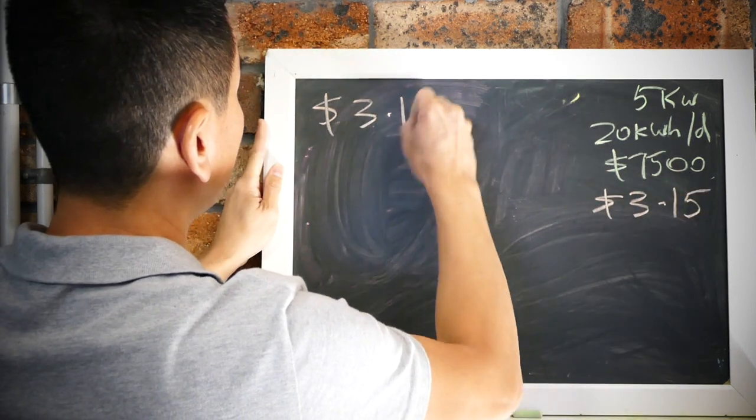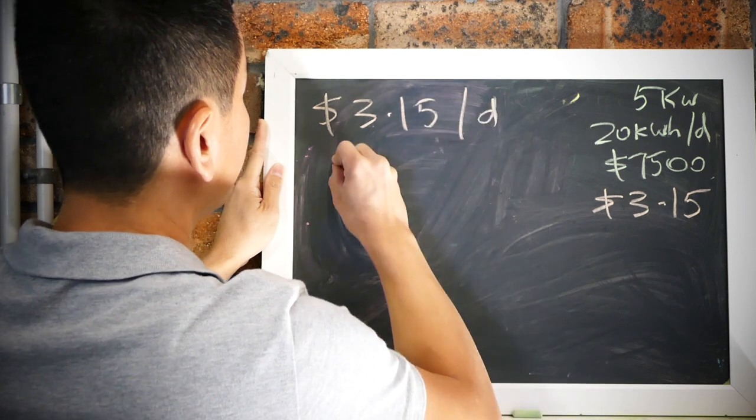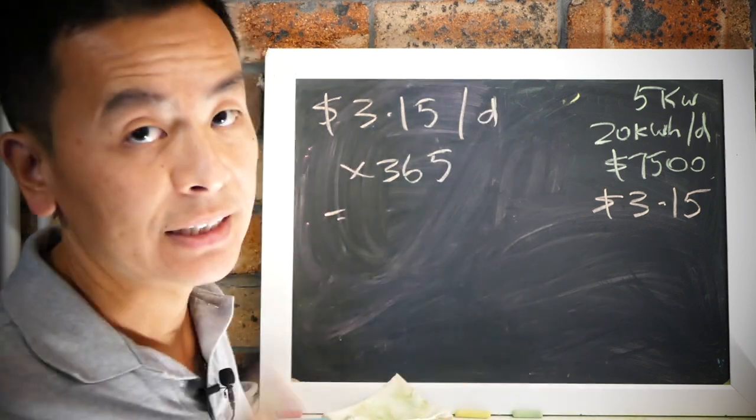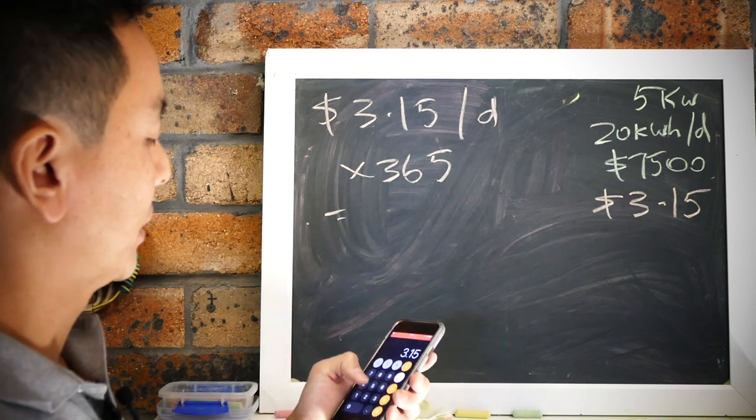Three dollars fifteen every day times 365 days in a year is three dollars fifteen times three sixty-five, that's one thousand one hundred and forty nine dollars and seventy-five cents.